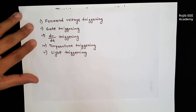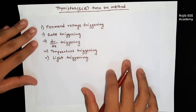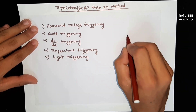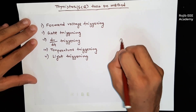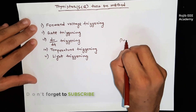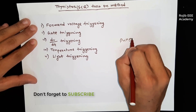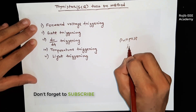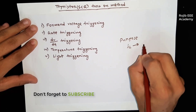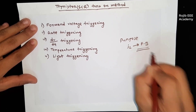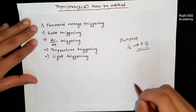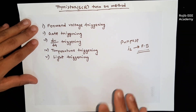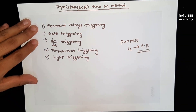I'm going to learn about the details of the third turn-on method. The main purpose is to show the junction J2 to forward biased. Let's see how the details are.